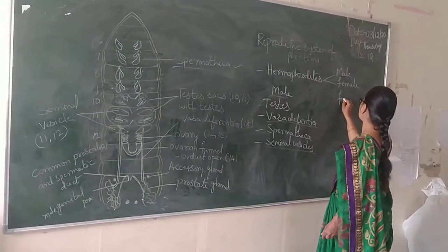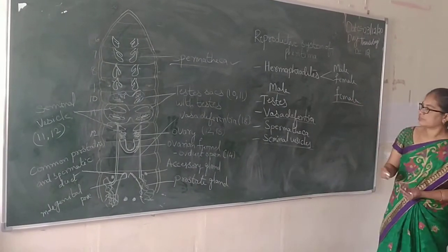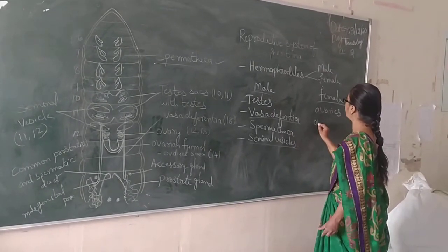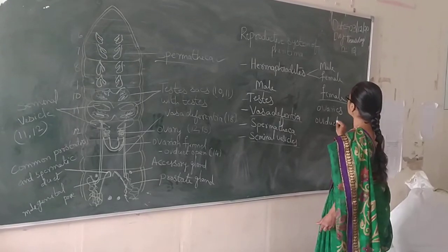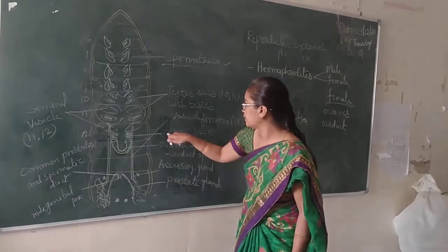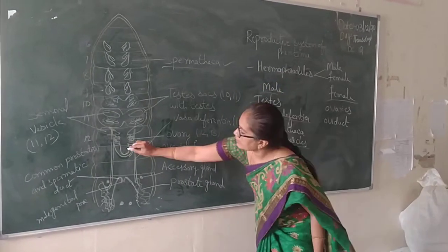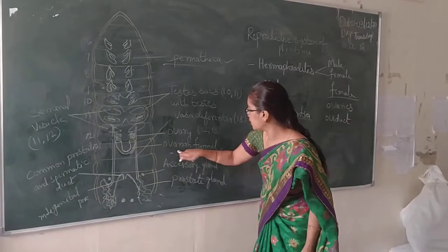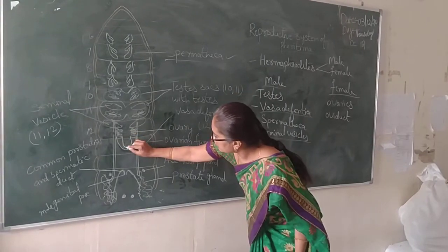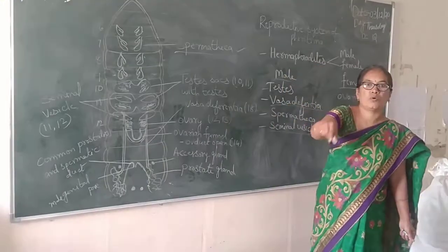In the female reproductive system, they contain Ovaries and Oviduct. The Ovaries are present in the 12th and 13th segments. The funnel-like structures called Oviduct — also referred to as ovarian funnels — are duct-like structures. These Oviducts transport the ova.